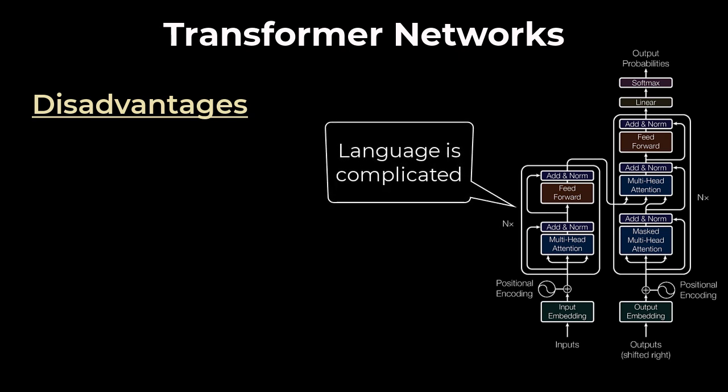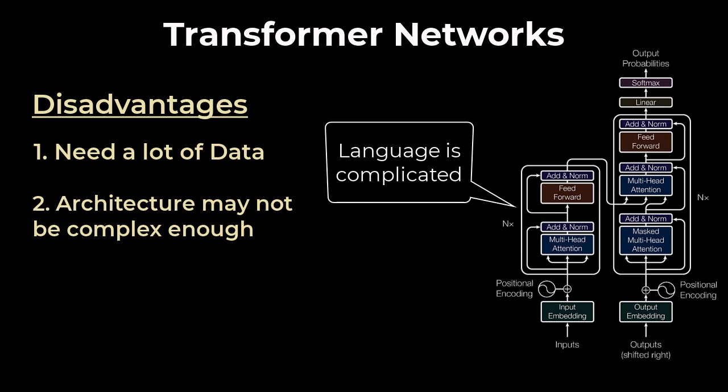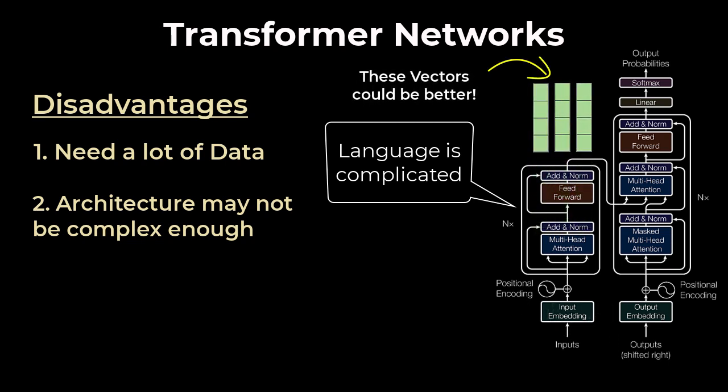And the main drawbacks associated with this are, we need a lot of data to train transformers from scratch, and the architecture may not be complex enough to understand patterns to solve these language problems. After all, transformers weren't designed to be language models, so the word representations generated can still be improved.